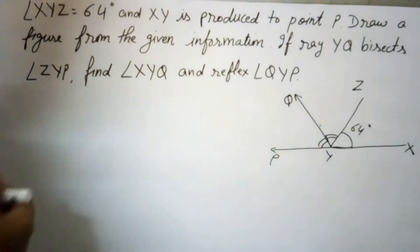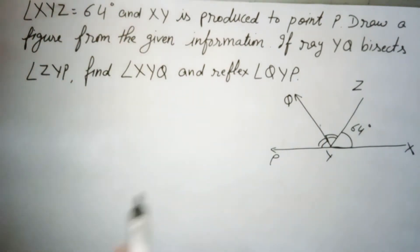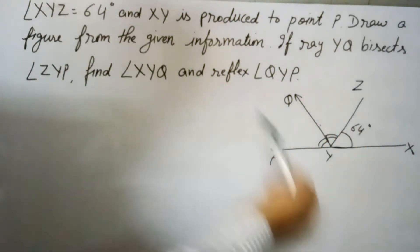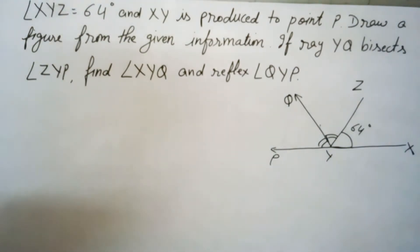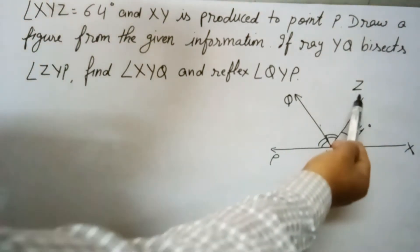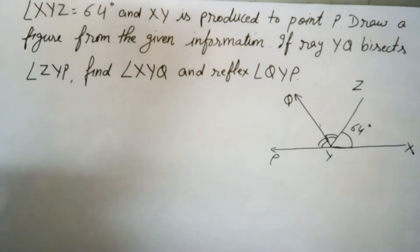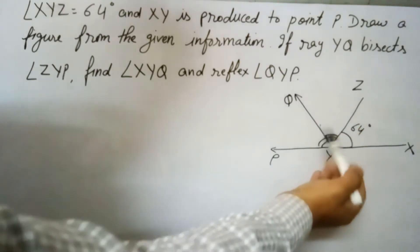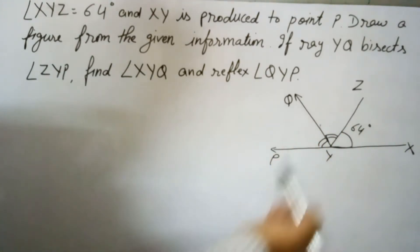Because angles XYZ and ZYP are forming a linear pair, so first of all we find angle ZYP with the power of linear pair. Then half of that angle, half of angle ZYP, will be angle ZYQ. So from that we will find this.